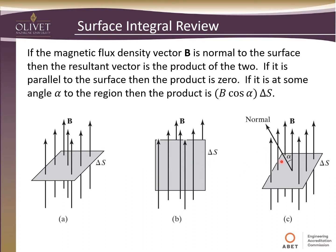And if it's at some arbitrary angle like here, like we showed on the previous slide, then the product would be the magnitude of the magnetic field times the cosine of this angle to get that projection on there with the area itself.